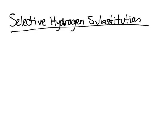In this video, I want to talk about selective hydrogen substitutions — essentially which hydrogen a halogen will pluck off to form the molecule. We'll do both chlorination and bromination.